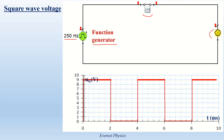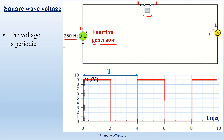The first remark is that the voltage is periodic because it repeats itself identically during a constant time interval, which is equal to 4 ms as shown in the figure. This constant time interval is the period of the voltage. The period of the voltage is equal to 1 over the frequency. The frequency of the generator is 250 Hz, so 1 over 250 Hz is 0.004 seconds, which is equal to 4 ms.